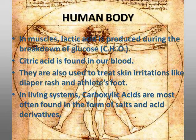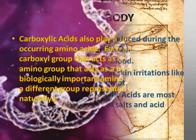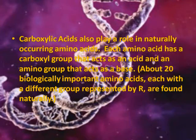In living systems, carboxylic acids are most often found in the form of salts and acid derivatives. Carboxylic acids also play a role in naturally occurring amino acids. Each amino acid has a carboxyl group that acts as an acid and an amino group that acts as a base. About 20 biologically important amino acids, each with a different group represented by R in the equation, are found naturally.